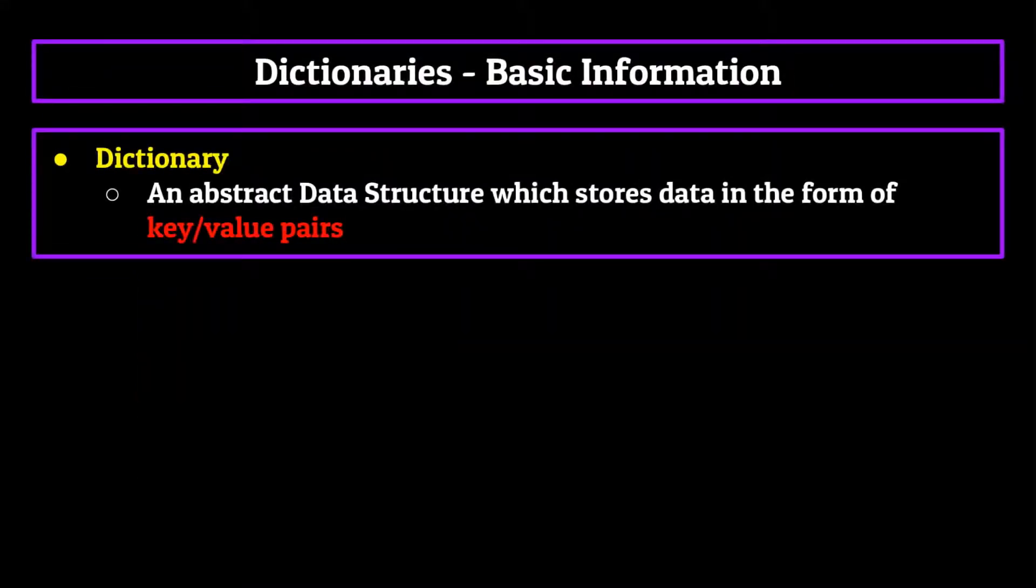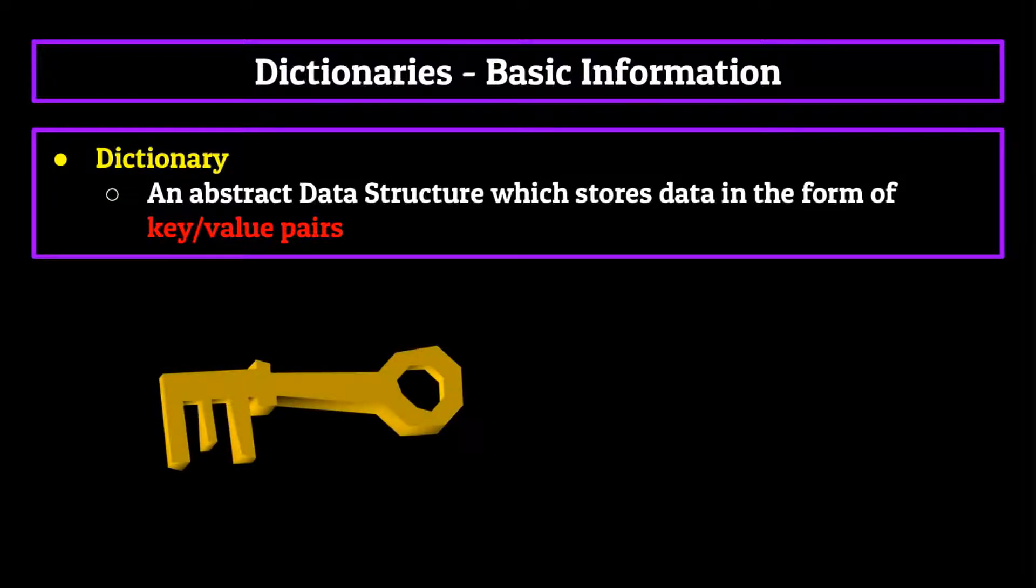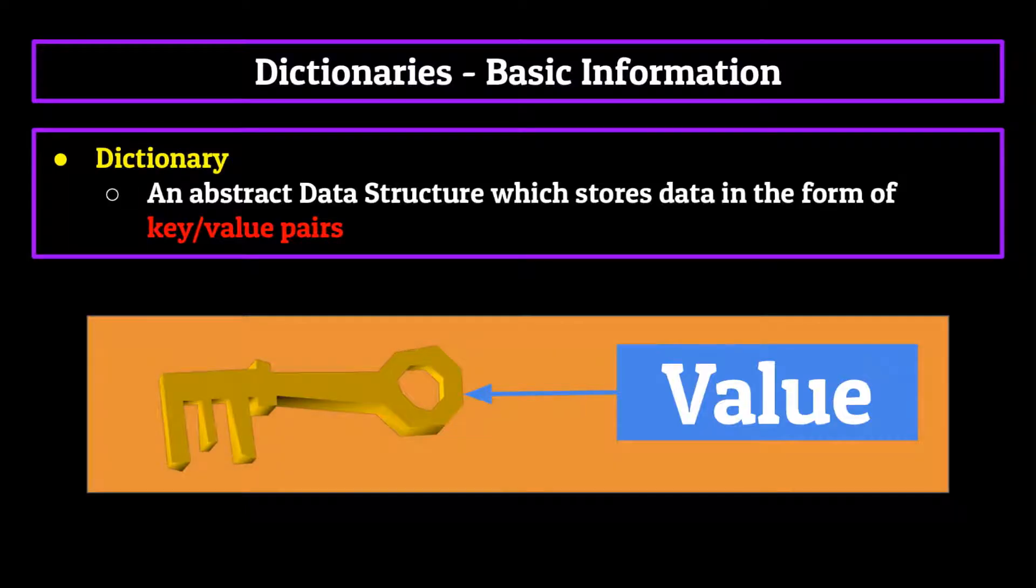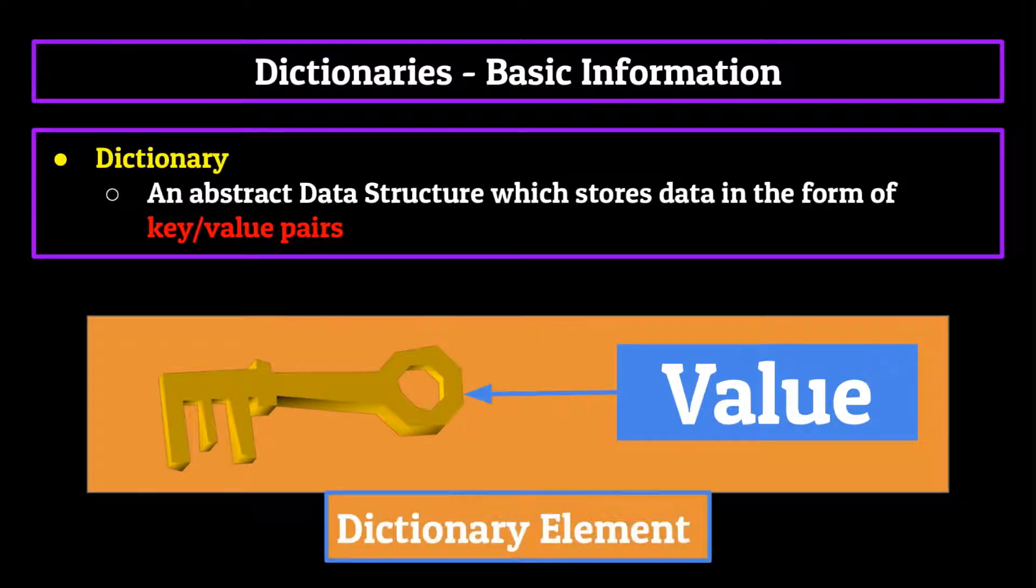Now a dictionary in computer science by definition is an abstract data structure which stores data in the form of key value pairs. This means that we have two main parts to a dictionary element, the key and the value. Each value has a special key associated with it. And together, they create a pair which is stored in the dictionary data structure as an element of that dictionary.